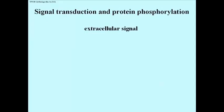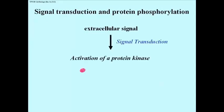This slide summarizes the themes of signal transduction. The signal molecule binds to a specific receptor on the outside surface of target cells, resulting in the activation of intracellular protein kinases. These are enzymes that catalyze the phosphorylation of other cellular proteins.